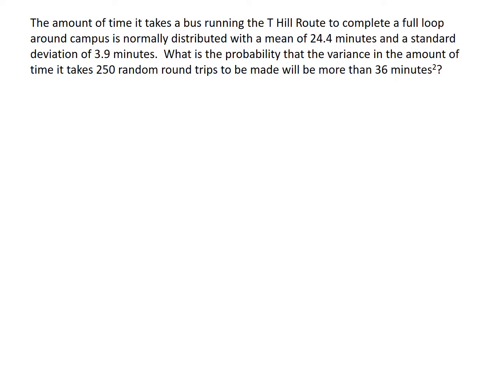We've had this information before when we were talking about the sample mean x-bar. We're talking about the hill route — the time to take one full loop around campus — normally distributed with a mean of 24.4 minutes and a standard deviation of 3.9 minutes. We're asked: what is the probability that the variance in the amount of time it takes for 250 round trips will be more than 36 minutes squared? Remember, variance — the units are squared.